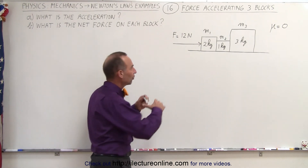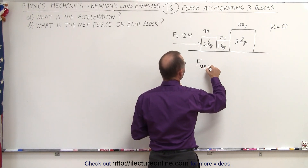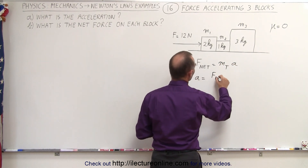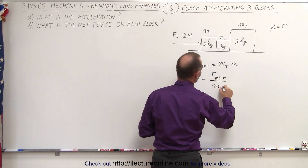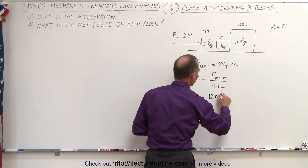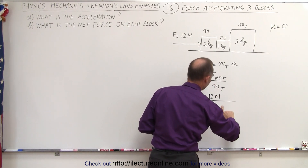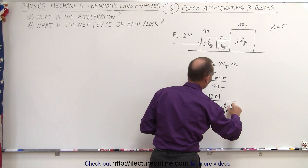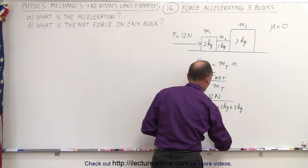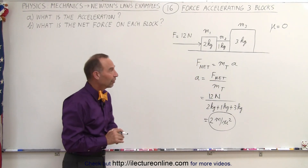First, we're going to find the acceleration of the system. We can say that F net is equal to mass total times acceleration, or the acceleration is equal to the net force divided by the total mass. Since there are no opposing forces, this is the only force acting — 12 newtons — and the total mass would be 2 kilograms plus 1 kilogram plus 3 kilograms. So that would be 12 divided by 6, or 2 meters per second squared, for the acceleration of the whole system and therefore the acceleration of each block.